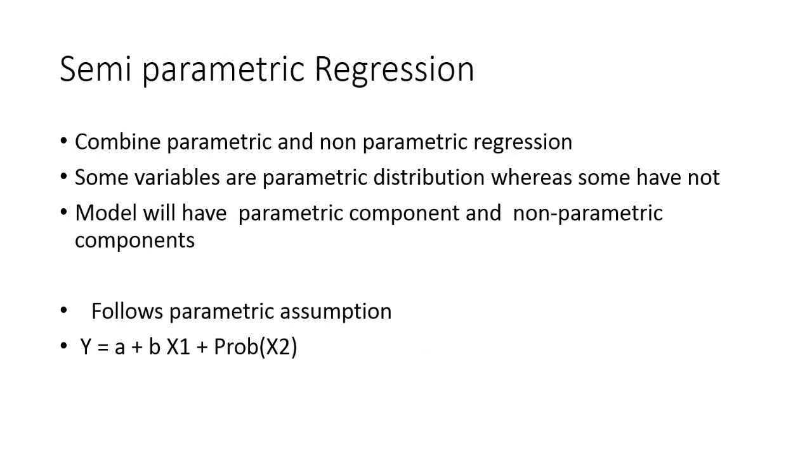Whereas for some independent variables, we do not have sufficient information and we don't know exactly the distribution. In these scenarios where we use both, this is known as semi-parametric regression, which will have a parametric component as well as a non-parametric component.